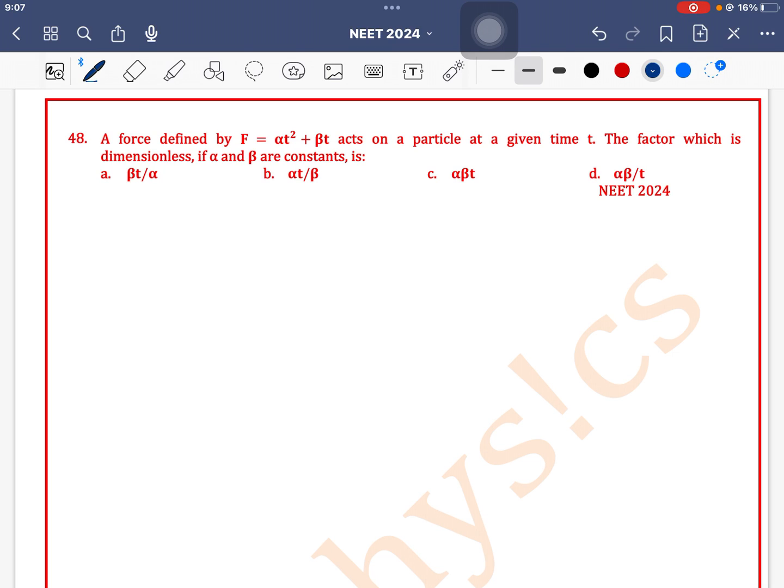A force defined by F equals alpha t squared plus beta t acts on a particle at a given time t. The factor which is dimensionless if alpha and beta are constants. First, let's find the dimension of alpha.